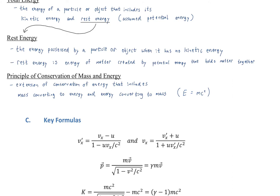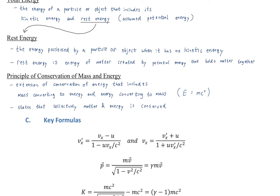It goes both ways — it is possible to convert energy to mass, just as it is possible to convert mass to energy. You can create electrons from photons; it has been done. The principle of conservation of mass and energy states that collectively, matter and energy are conserved. They can trade back and forth from one state to another, but collectively it's conserved — which means we need a way to quantify how much matter gives how much energy.